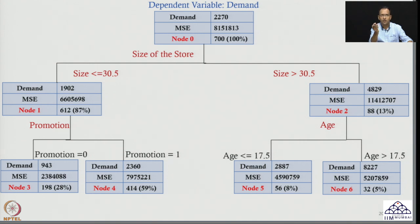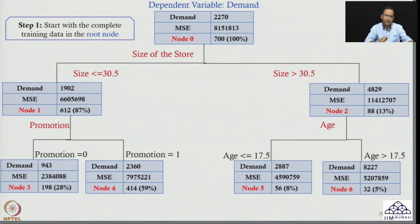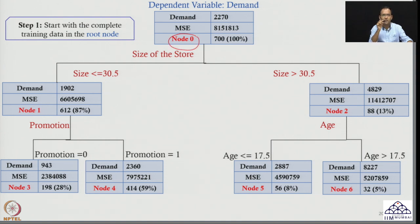Similarly for size of the store — the cutoff value could have been 20,000 or 10,000 square feet, so why was 30,500 square feet chosen? All of this will be answered once we see the steps. The first step of the regression tree is to start with the complete training data in the root node. In our case, the root node is node 0, and I have all 700 training observations there.